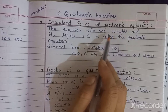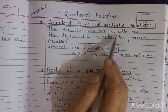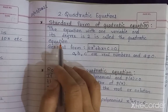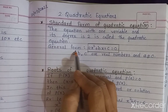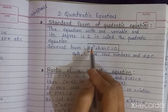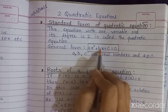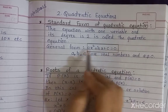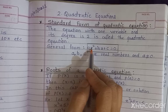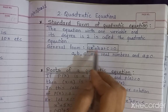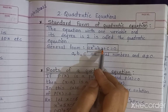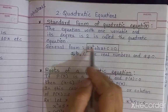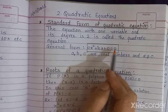The equation with only one variable and its degree is 2 — that is the quadratic equation. Its general form is ax² + bx + c = 0. Here you can see the powers of the variable are in decreasing order.